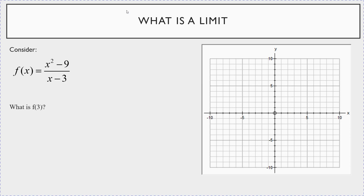So first off, what exactly is a limit? Let's consider this function: f of x is equal to x squared minus 9 over x minus 3. What is f of 3? If you plug 3 into this function, you get 3 squared minus 9 over 3 minus 3, which gives you 9 minus 9 over 3 minus 3 — that's 0 over 0. It's undefined; you can't divide by 0 here.